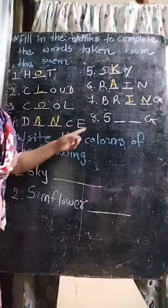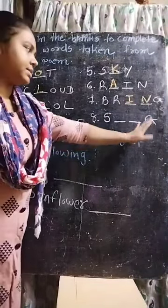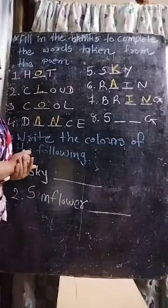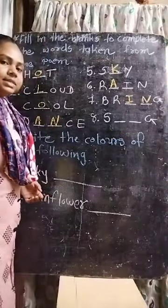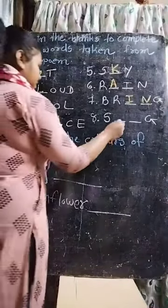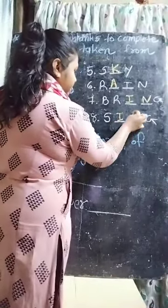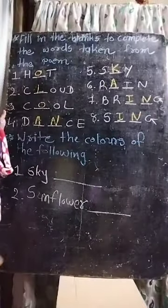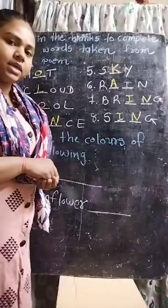Now eighth one: S_D_D_C_E. जब बारिश होती है तब children क्या करते हैं? Sing करते हैं. So write S-I-N-G. Sing.